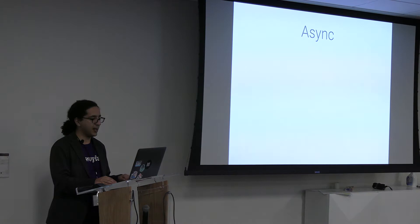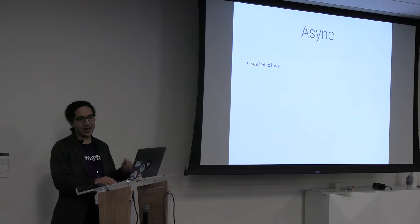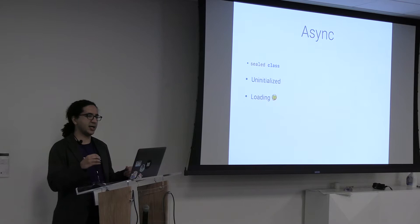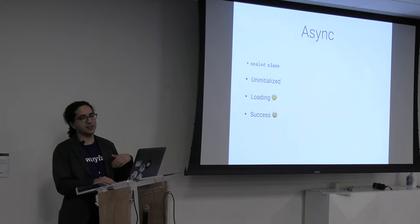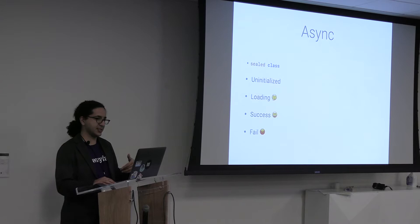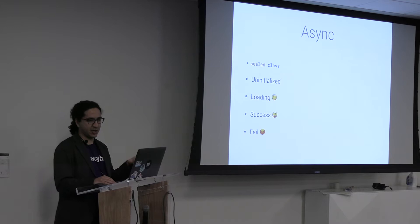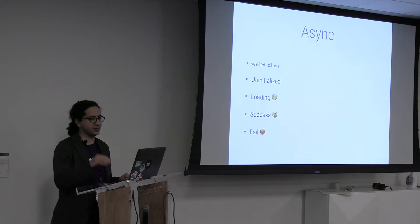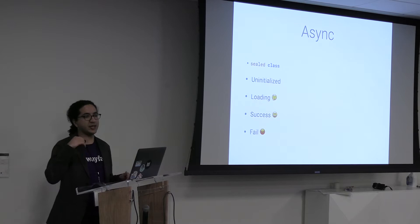Async is a sealed class given to you by Mavericks. It's basically a way of giving you loading, content, and error states. It wraps the data you're interested in and has four possible values: Uninitialized — the default state, roughly corresponding to null; Loading — indicating your async operation has started but not completed; Success — indicating it completed and everything is good; and Fail — indicating an error occurred. Once you determine the type of Async you have, subclasses give you ways to get at the data. On a Fail object you can do .error to get the exception; on a Success object you can do .invoke to get the data.